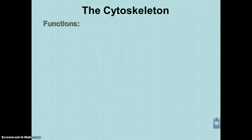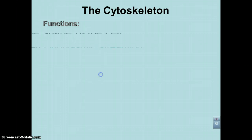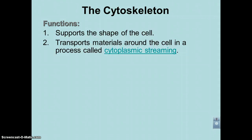Welcome to podcast number six: the cytoskeleton and the structure and function of the cell wall. I'm going to start off with the cytoskeleton. The first function of the cytoskeleton is it will support the shape of the cell. Basically what the cytoskeleton will do is create a framework within which the cell contents are arranged.